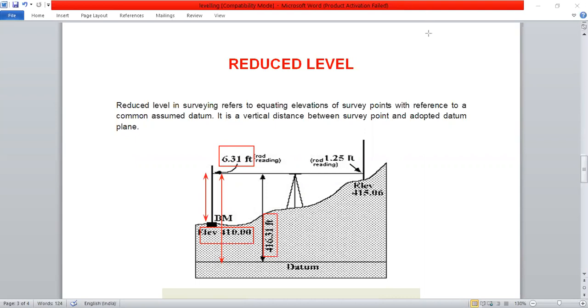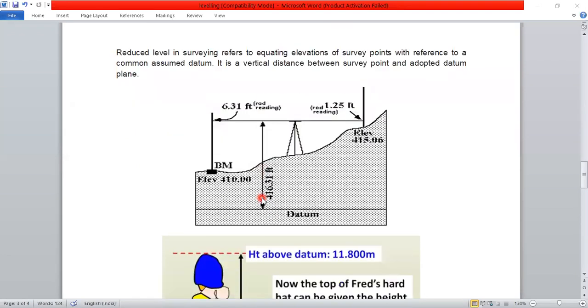Now I will clear up. This is the value. Datum, survey point, vertical distance. What is the reduced level? This is clear.